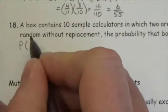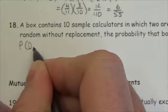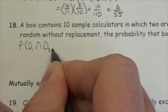Okay, so we've got the probability of getting a defective, the first one, and a defective for the second one.